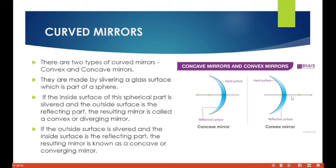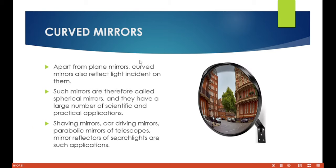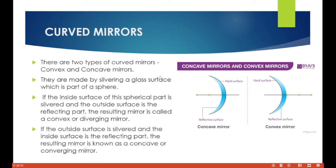There are two types of curved mirror: the convex and the concave mirror. They are made by silvering a glass surface which is part of a sphere. Light is supposed to go through the glass, but because of the silver part the light will bounce back and give us an image. So they are made by silvering a glass surface which is part of a sphere.